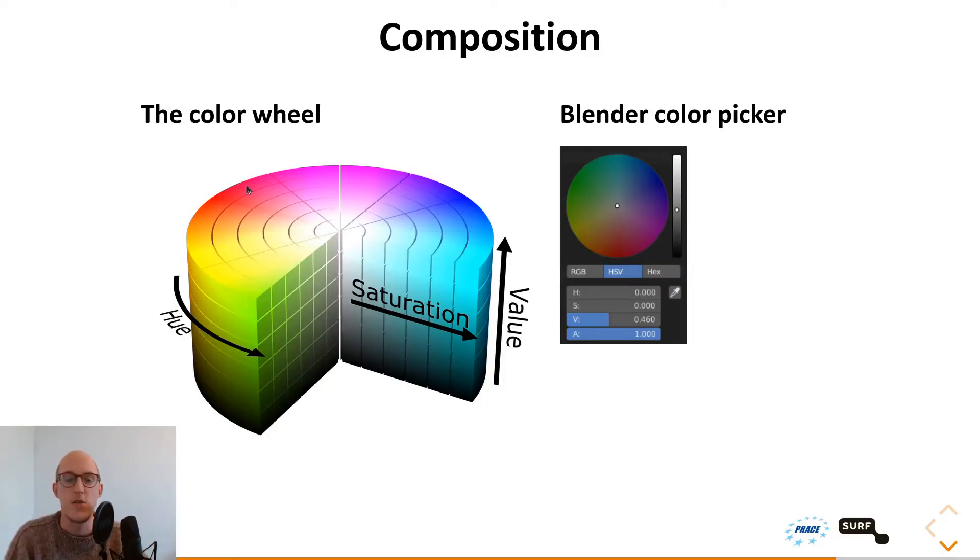Before we go into the guidelines of using color within your renders, we do need to understand what a color wheel is and how it's used in Blender. On the left you see a 3D representation of such color wheel. It's represented as a cylinder where the hue is all the possible colors that can be created with the color wheel. The saturation is the intensity or purity of the color. And the value is the brightness or darkness of the color. And the way it is represented in Blender is with this color picker. Here you also see this color wheel: red, green, blue. And with the value slider, but also with individual numeric entries.